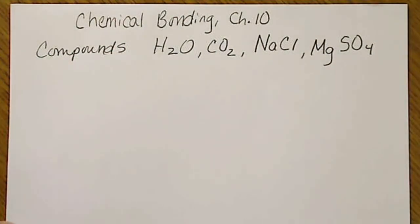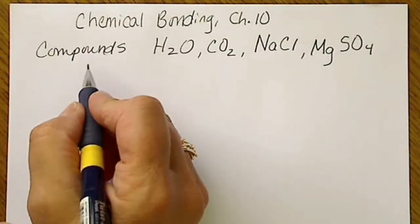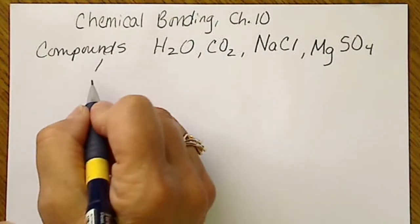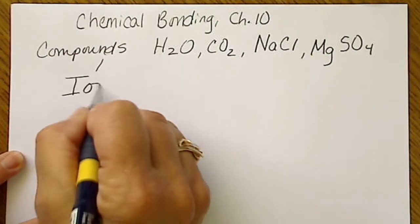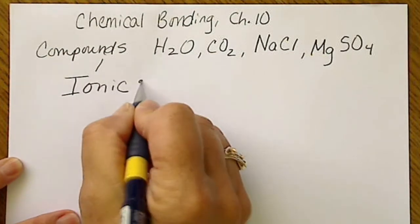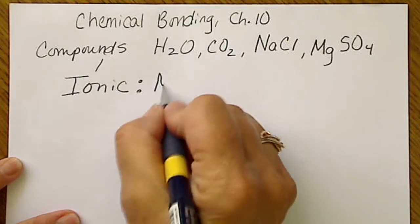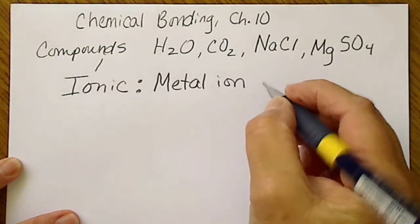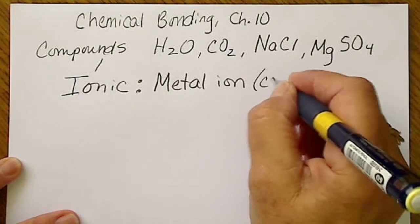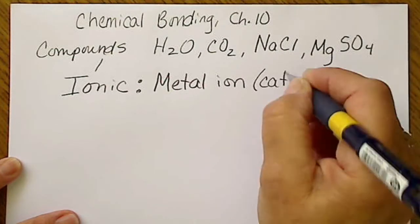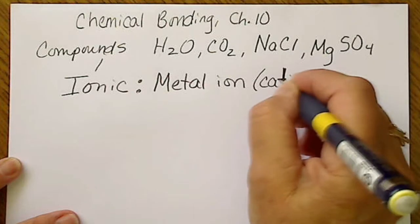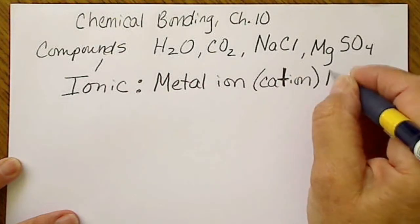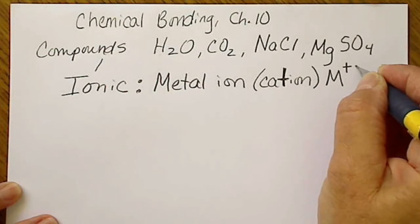So we're going to see that the two types of compounds are ionic and covalent. An ionic compound is always a metal ion, and to make a distinction we'll say cation. We can think of this T to remind us that it's a metal with some positive charge.